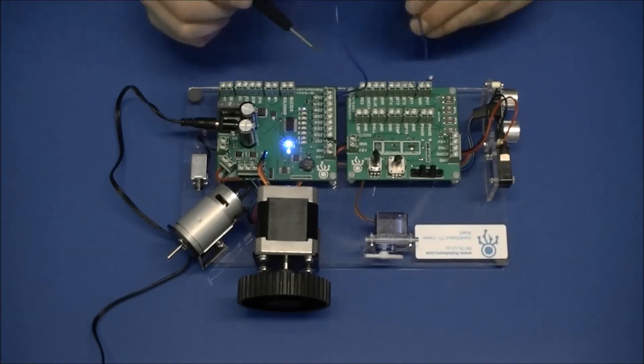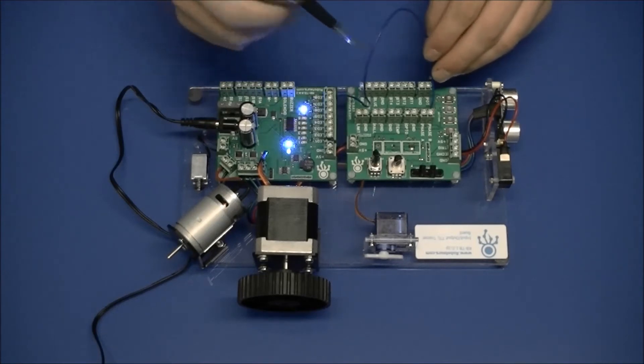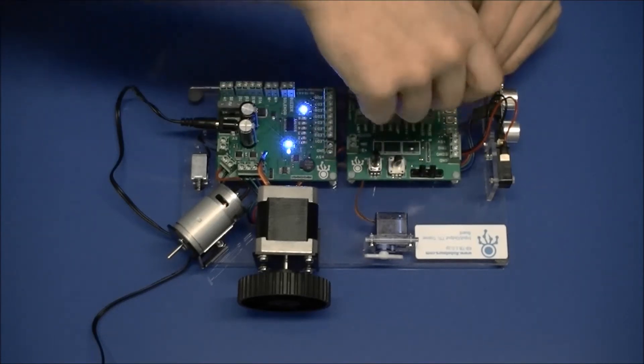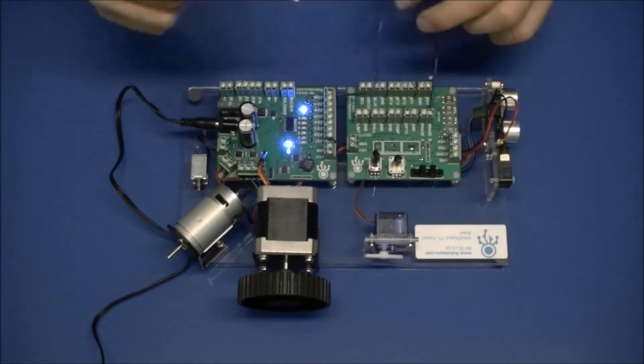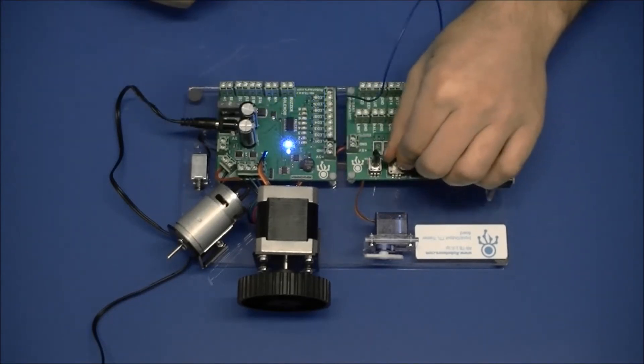We also have a digital encoder here. This is a two-phase encoder. It has phase A and phase B. This can be used to easily demonstrate how you would read an encoder.